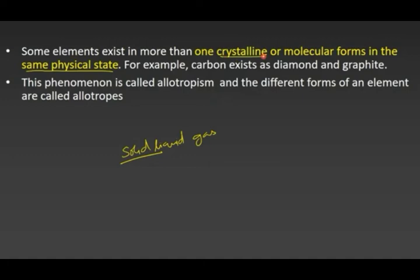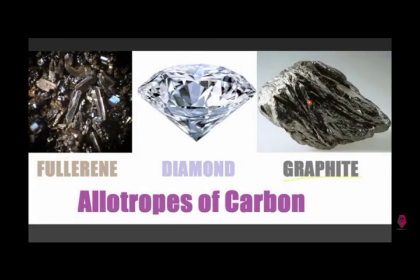That means, their physical properties are different but having same chemical properties. So already we studied in lower classes, what is allotropes? Some elements, they exist in more than one crystalline form and having a same physical property but differ in the forms in the same physical state. For example, carbon exists as diamond and graphite. Then another example is also there, silicon, germanium, tin, etc.